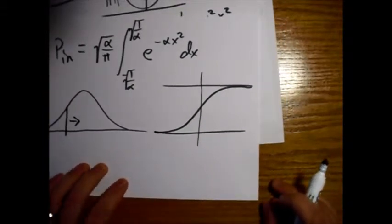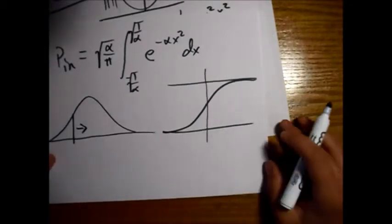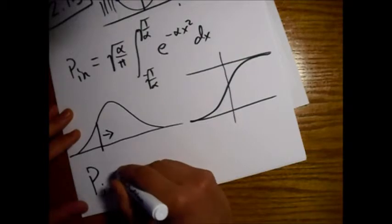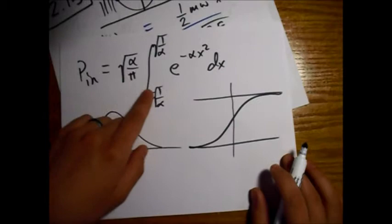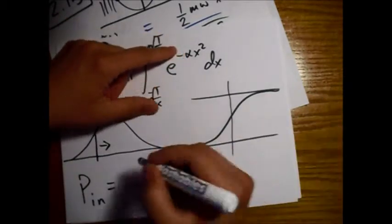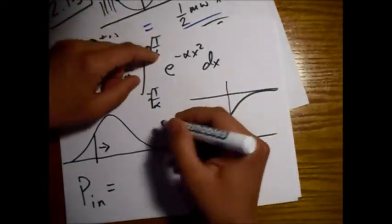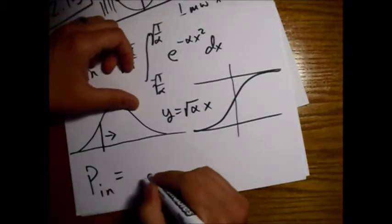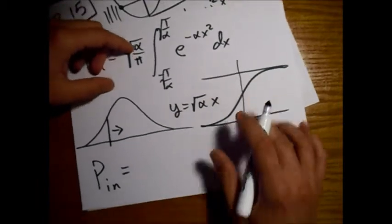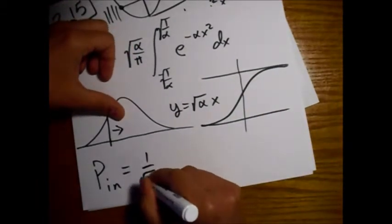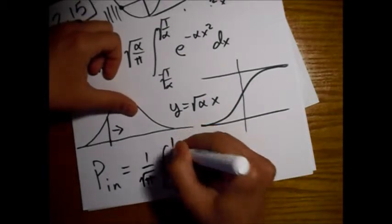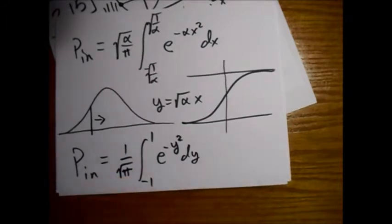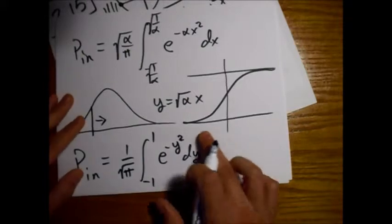To look up the numerical values, I'll make a substitution: let y = √α · x. With that substitution, the expression simplifies to (1/√π) times the integral from −1 to +1 of e^(−y²) dy. This is a cleaner form for when we evaluate using the error function definition.